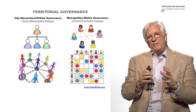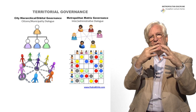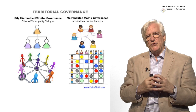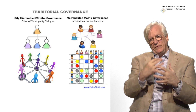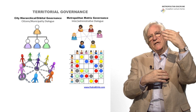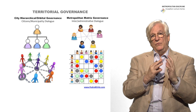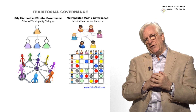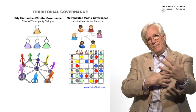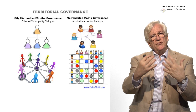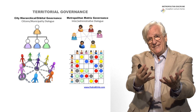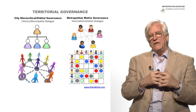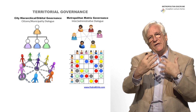In an urban system, you have the mayor, the departments, the population, and a top-down/bottom-up governance dialogue — which is one of the central issues in urban planning: how you present plans and projects, how the population reacts or brings its own initiatives, and how the city government takes those initiatives on board.